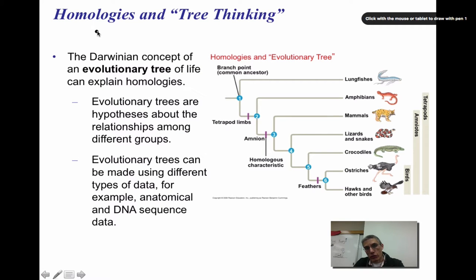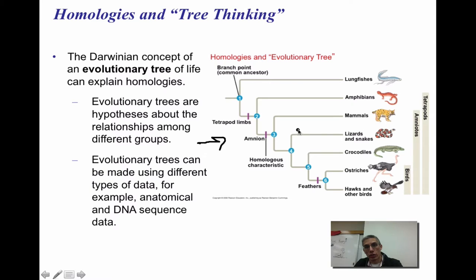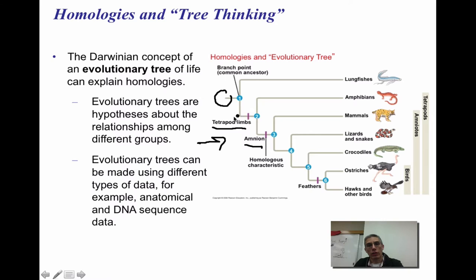All these different homologies are sometimes discussed as 'tree thinking.' The Darwinian concept of an evolutionary tree or phylogenetic tree of life can help explain the homologies we're looking at. Evolutionary trees are hypotheses about the relationships among different groups. In this cladogram you'll notice different characteristics listed: tetrapod limb, amnion, and feathers towards the bottom. The ancient common ancestor is the anchor point for all organisms on the far right. Reading the cladogram, when you look at where 'tetrapod limb' is located, all organisms from that point on have limbs — the lungfish above that point does not.